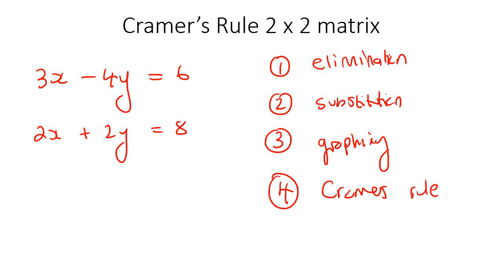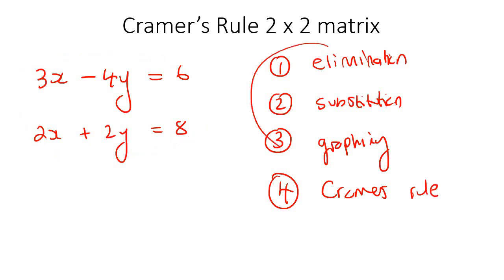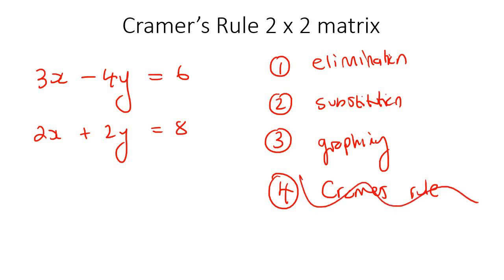You could technically just go solve all of these using the three methods we've learned before, but your teacher wouldn't be happy if the question says to use Cramer's Rule and you skip it. It all gives you the same answer — it's just a different technique. As long as you know how to work out the determinant of a 2x2 matrix, then this thing is so easy.